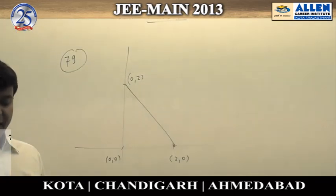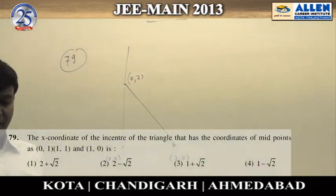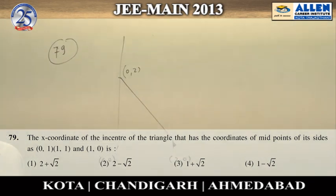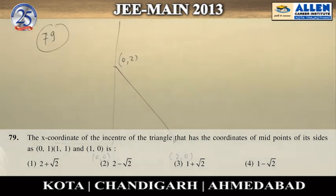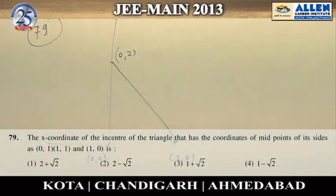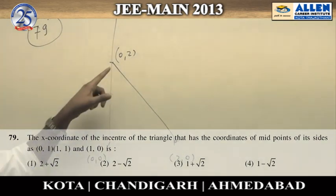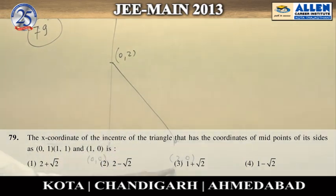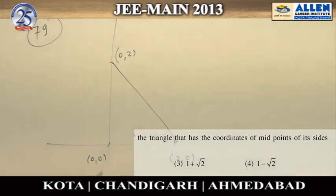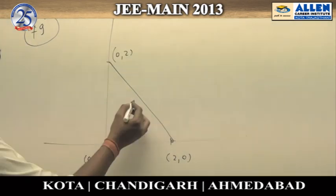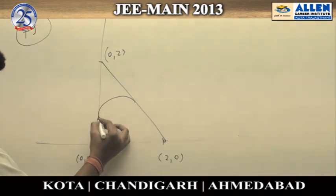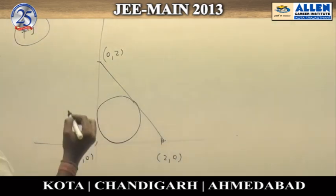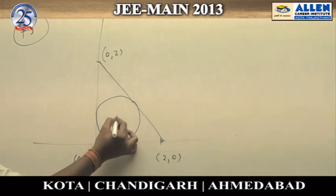Question 79: We have to find the X coordinate of the incenter of a triangle whose midpoints of sides are given as (0,1), (1,1), and (1,0). From these midpoints, we can calculate the coordinates of the vertices of the triangle, which are (0,2), (2,0), and (0,0).